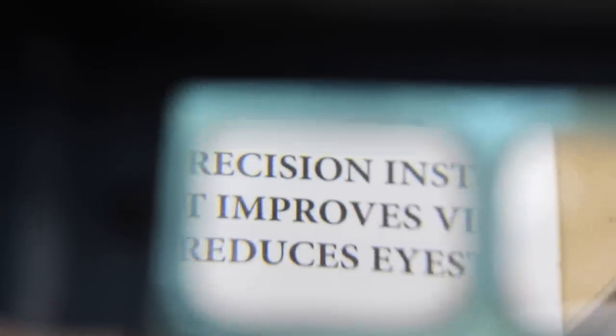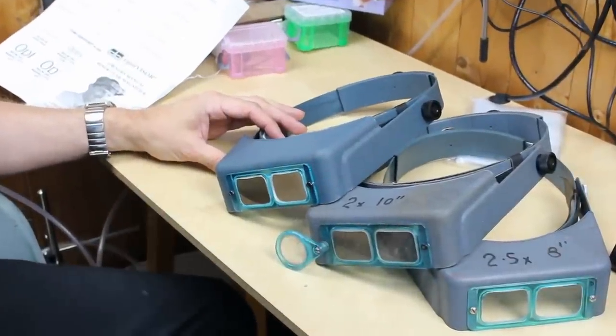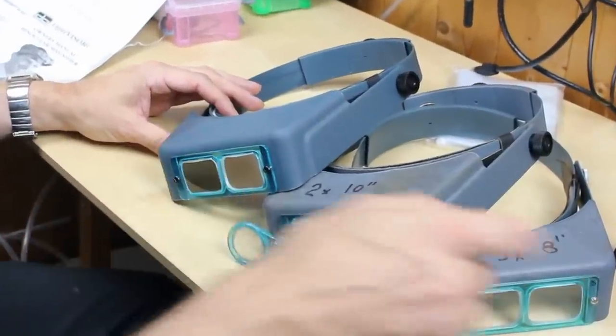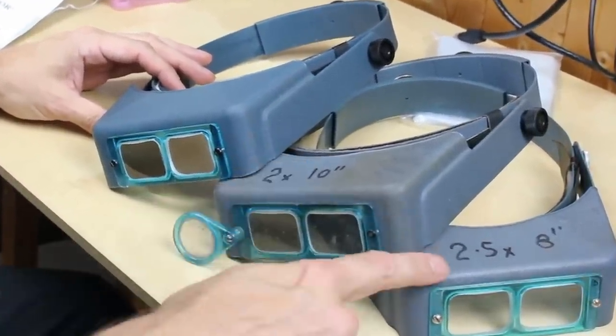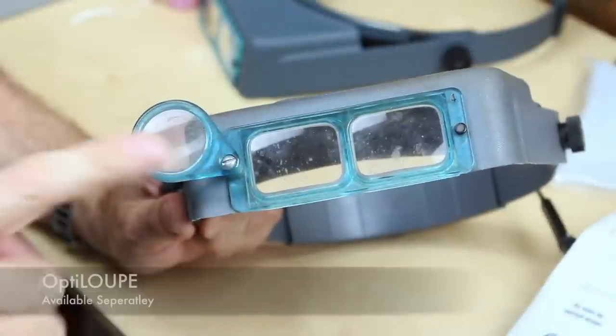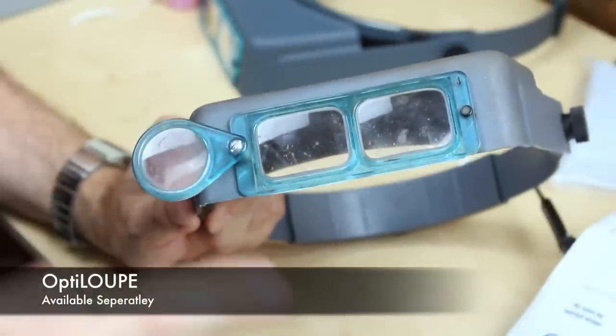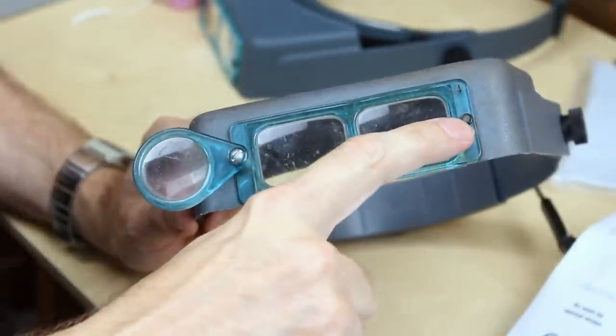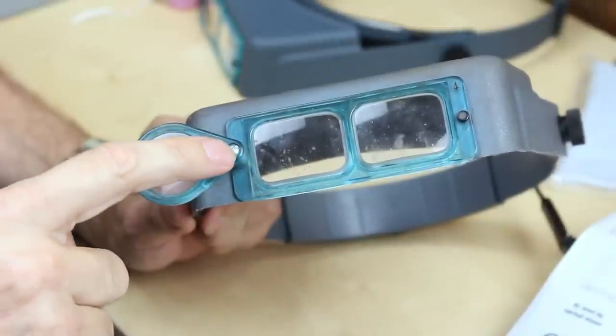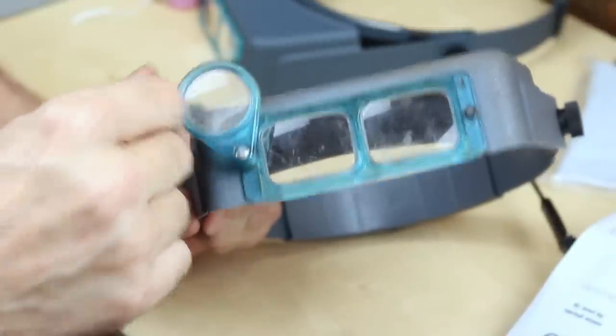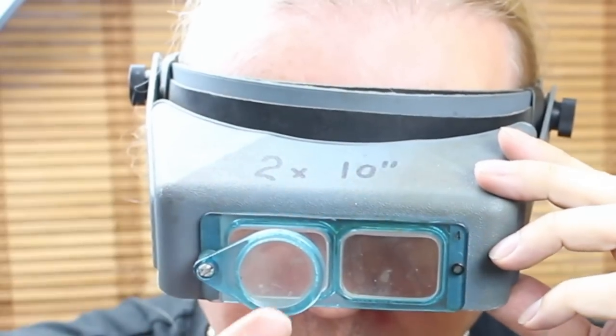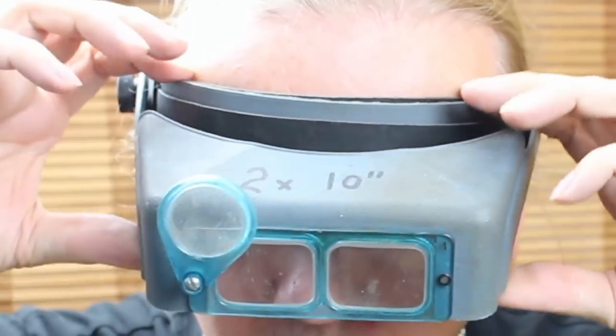As you can see here, I've got several Optivisors with different lenses so I can switch them out depending on what I'm doing. A great little optional extra here you can buy is the Opti Loop, and this just screws on the front, either left or right, and you can swivel it down to add 2.5 times to the power of your lenses that you've got already. So handy, great for reading hallmarks and things.